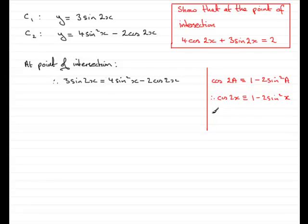If we add 2 sine squared x to both sides, we've got 2 sine squared x plus cos 2x is identical to 1. And if we take away cos 2x from both sides, we end up with 2 sine squared x is identical to 1 minus cos 2x.